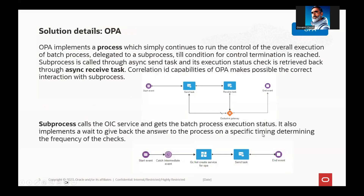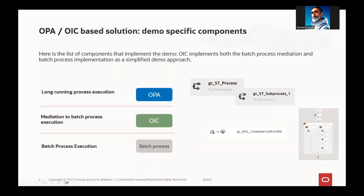The implementation is based on the process which continues to check the overall execution of the batch process and delegates to a sub-process the retrieval of the status of the underlying batch processes. We will see this solution during the demo, which is mainly about the process calling a sub-process and waiting in an async way for the sub-process to give back the result. The sub-process has a start event, waits for a bit, then calls OIC which gets the batch process status.